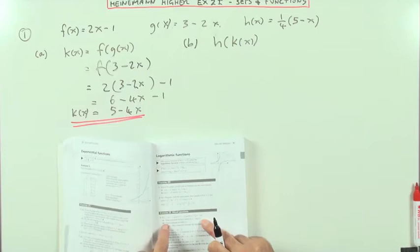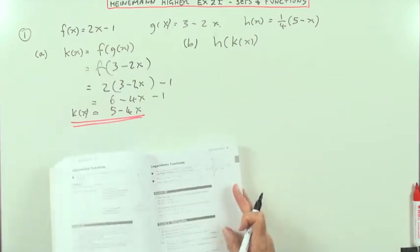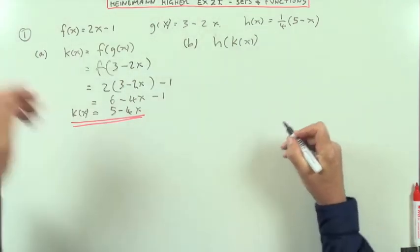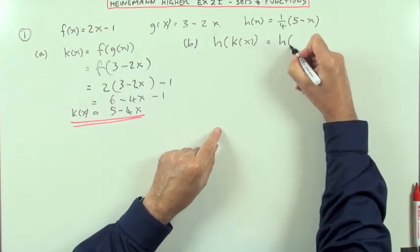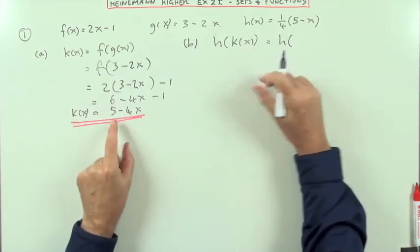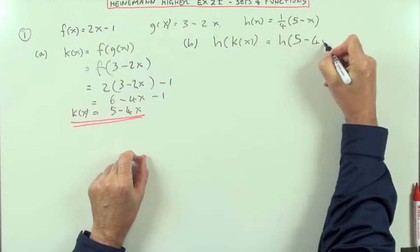Right, second bit. Find a formula for h of k of x. Well, I've got k of x now. Well, that simply means I would have h acting on whatever k of x is. That's five minus four x.